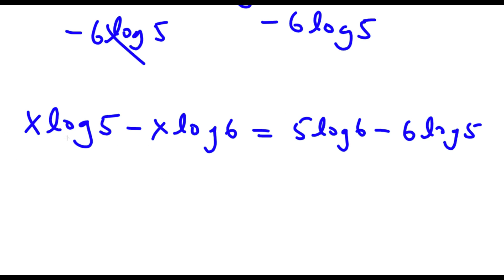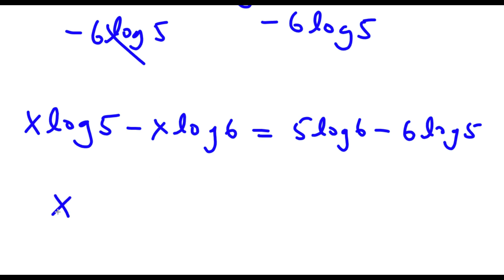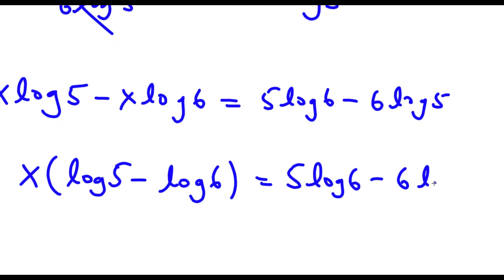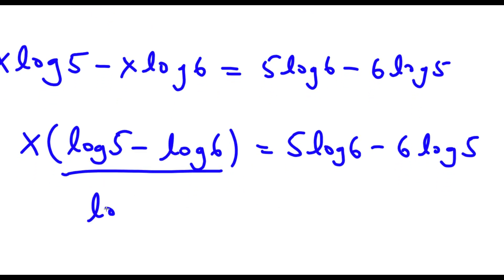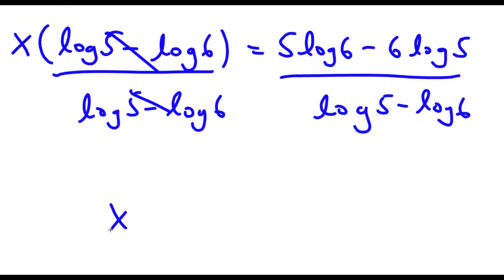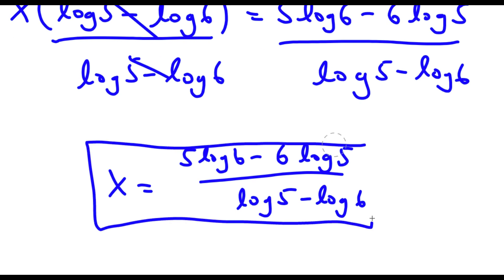Now we want to isolate x. I'm going to factor out x from the left side. So now I have x times (log 5 minus log 6) is equal to 5 times log 6 minus 6 times log 5. And now I can divide both sides by log 5 minus log 6. So I'll be left with x is equal to 5 times log 6 minus 6 times log 5, over log 5 minus log 6. So this is our answer.